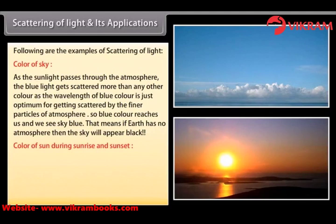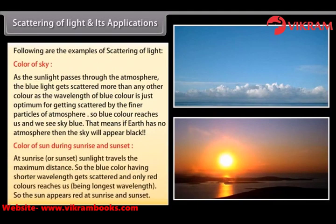Color of sun during sunrise and sunset — at sunrise or sunset, sunlight travels the maximum distance through the atmosphere. So the blue color, having a shorter wavelength, gets scattered and only red color reaches us, being of the longest wavelength. So the sun appears red at sunrise and sunset.